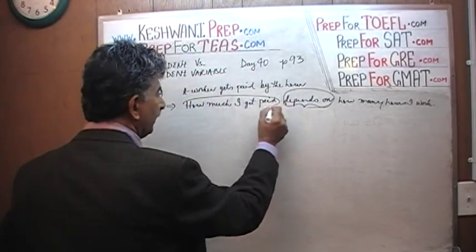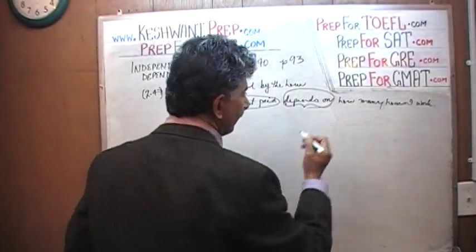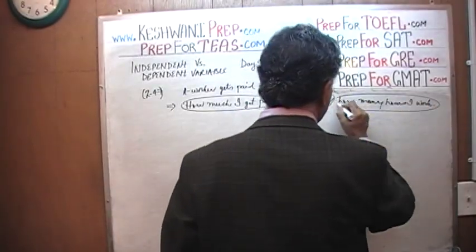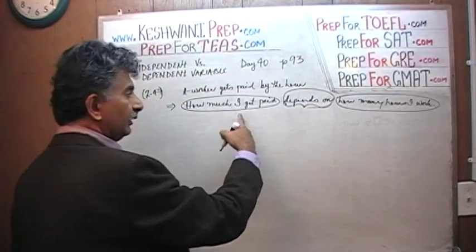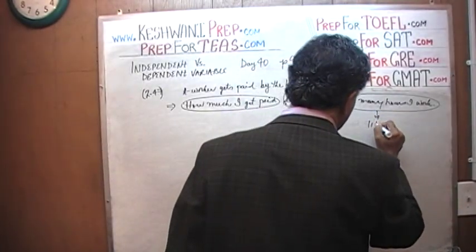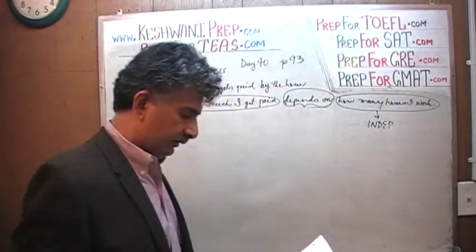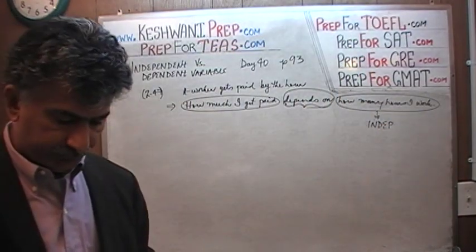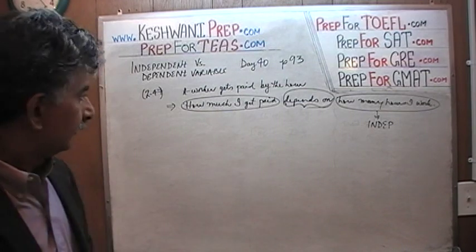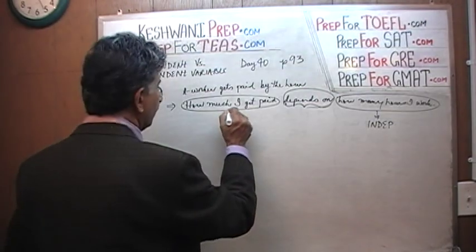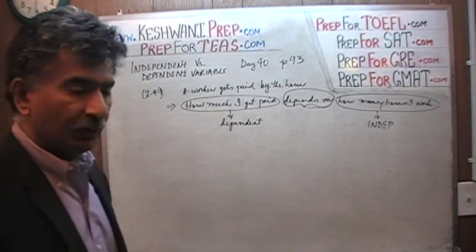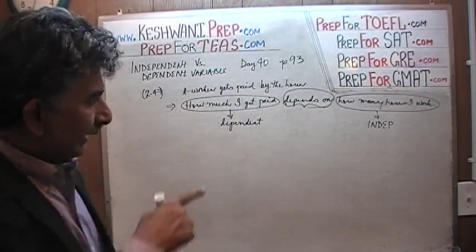How much I get paid depends on how many hours I work. How many hours I work determines what I get paid. So how many hours I work is the independent part. How much you get paid depends on — that's the dependent variable. And how many hours I work is the independent variable. That's all it is.